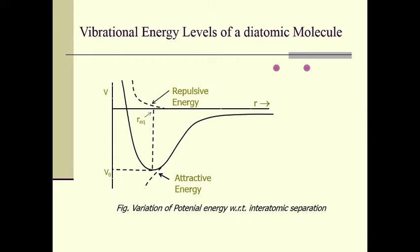The two positively charged ion cores will repel each other. So there will be repulsion between the positively charged ion cores, and also there will be repulsion between the negatively charged electrons of the two atoms. That means repulsion exists between the positively charged ions as well as the negatively charged electrons of both atoms.